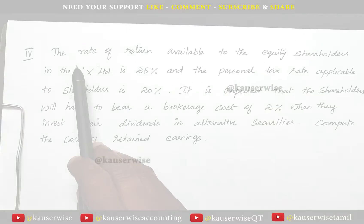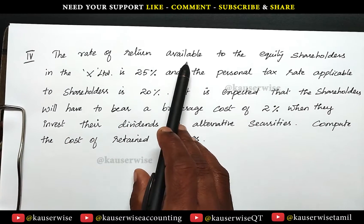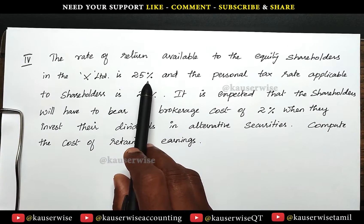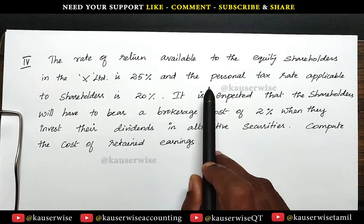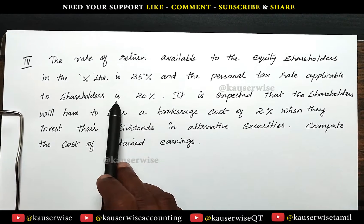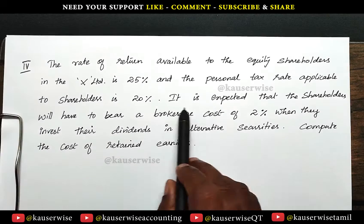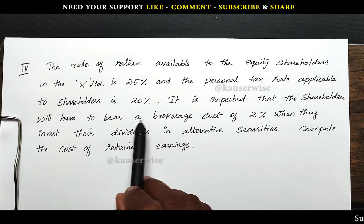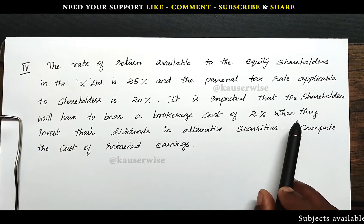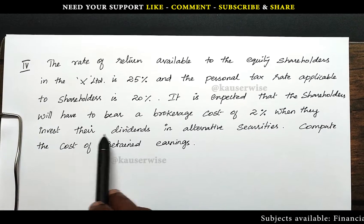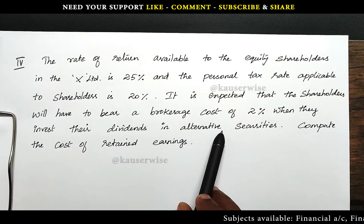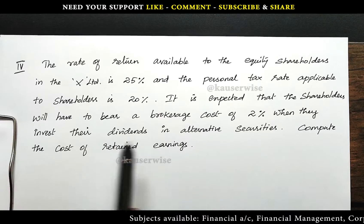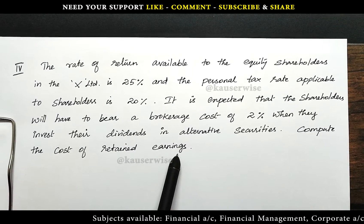Now let's see the problem. The rate of return available to the equity shareholders in X Limited is 25%. The personal tax rate applicable to the shareholder is 20%. It is expected that the shareholders will have to bear a brokerage cost of 2% when they invest their dividend in alternative securities. With this information, they're asking you to compute the cost of retained earnings.